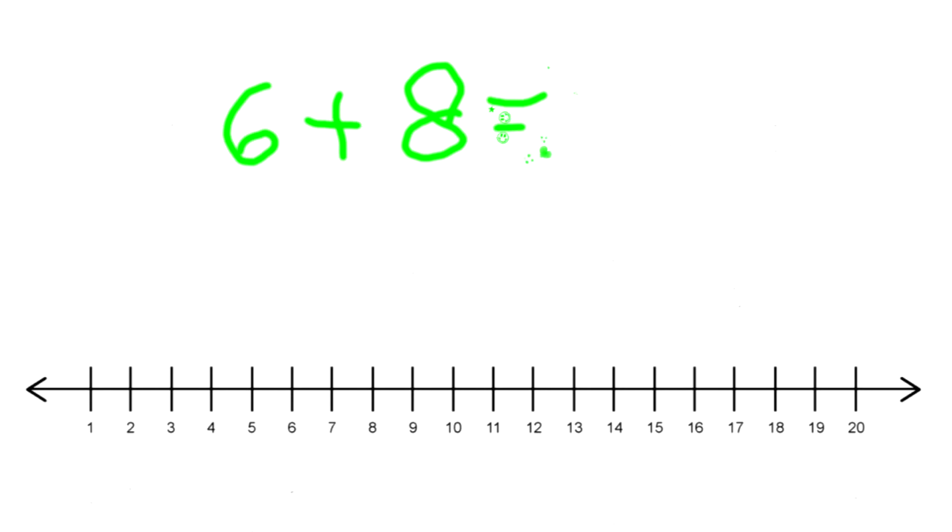6 plus 8. Alright, 6 plus 8, what does that equal? So first of all, we look for the biggest number and that would be the number 8. So we find 8 on our number line right here, and how many times are we going to jump or hop? Six times. So we're going to hop like a frog: 1, 2, 3, 4, 5, 6.